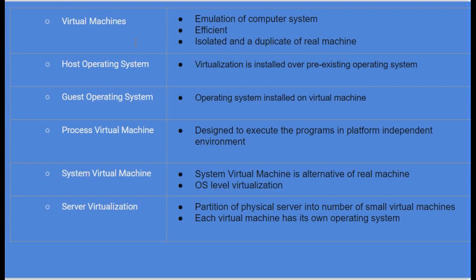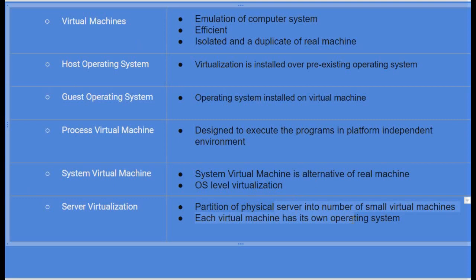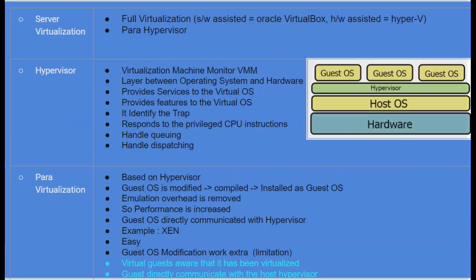A system virtual machine is an alternative of the real machine — it is operating system level virtualization. Server virtualization is the partition of a physical server into a number of small virtual machines, each with its own operating system. In server virtualization, there are two types: full virtualization and para virtualization. Full virtualization can be software-assisted or hardware-assisted.